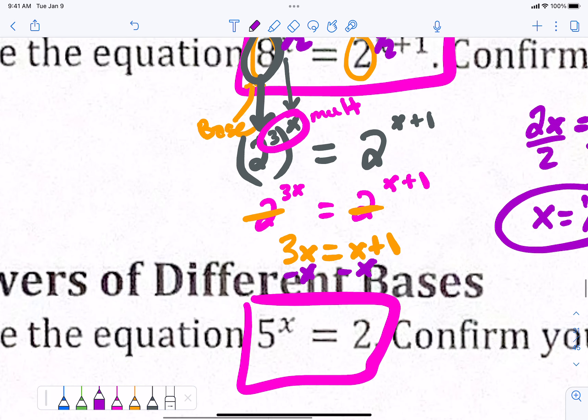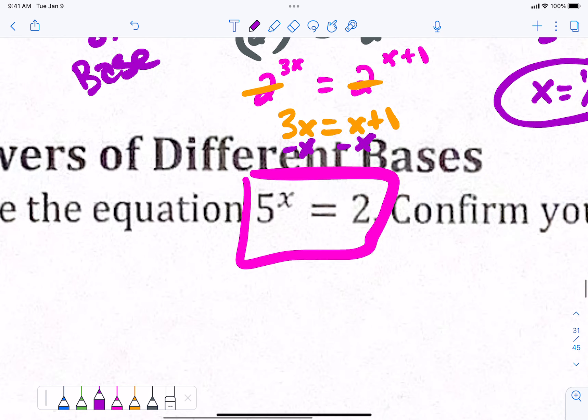That is called the change of base strategy. The change of base strategy does not work for every problem, as in the next one. My bases are 5 and 2. Can 5 be written as 2 to some power? 2 to the second power is 4, 2 to the third power is 8. I cannot get 5 out of that.